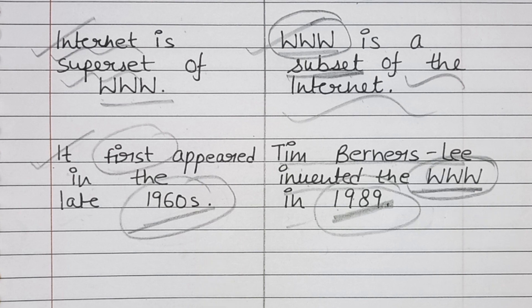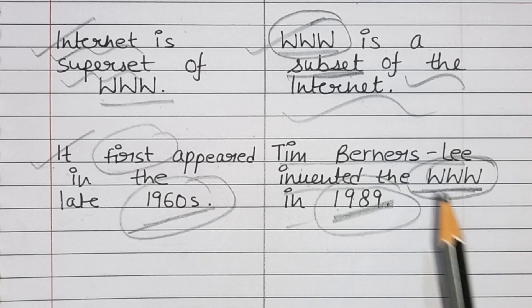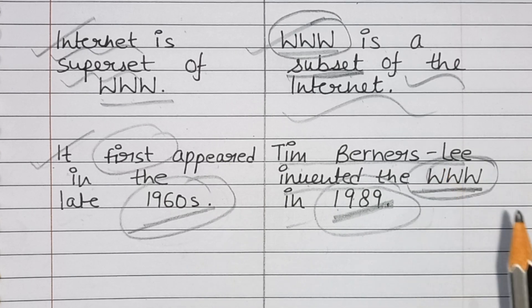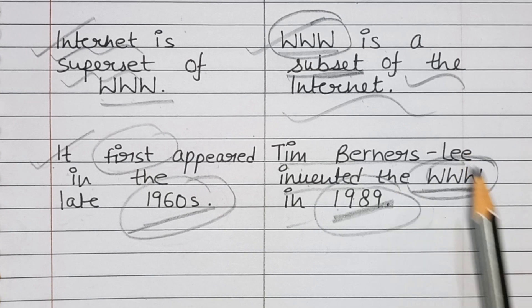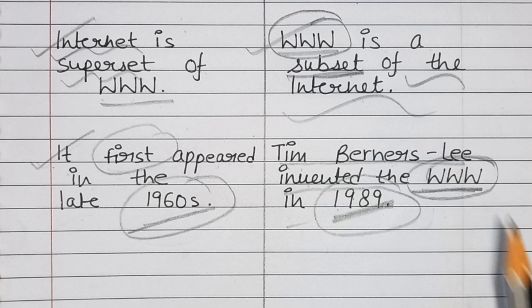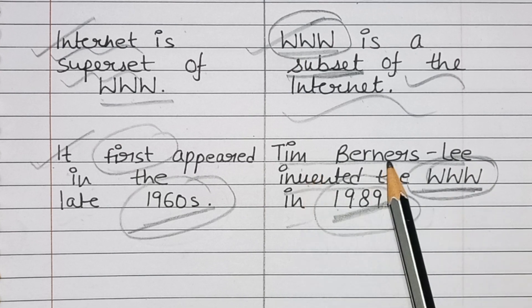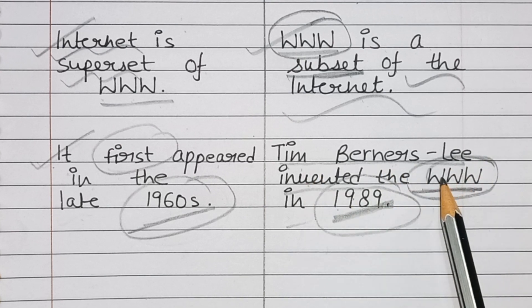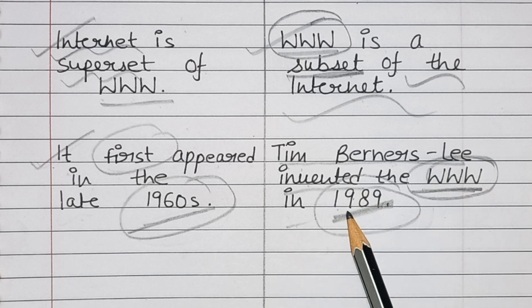To summarize: the internet uses Transmission Control Protocol/Internet Protocol and is a superset of the world wide web, first appearing in the late 1960s. The web uses Hypertext Transfer Protocol, is a subset of the internet, and Tim Berners-Lee invented it in 1989.